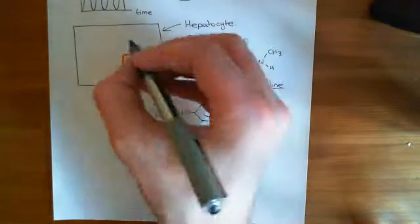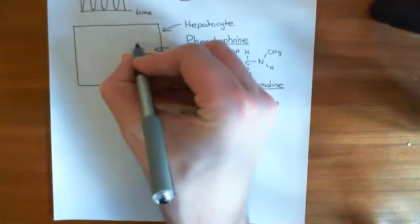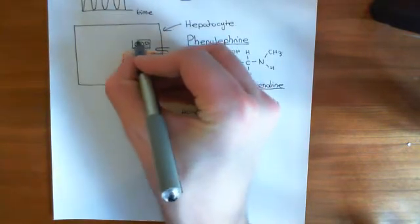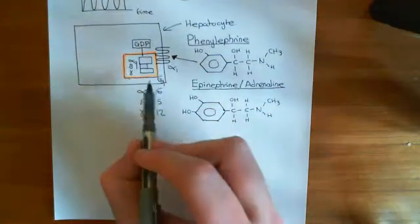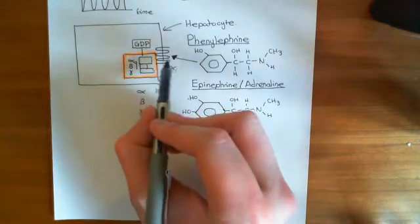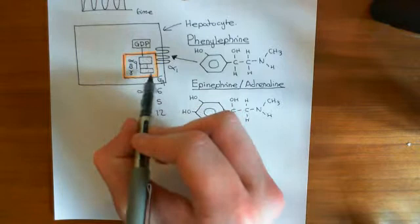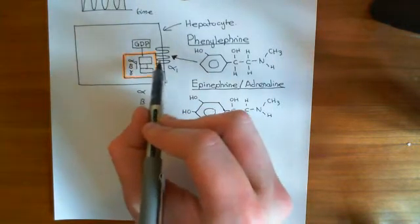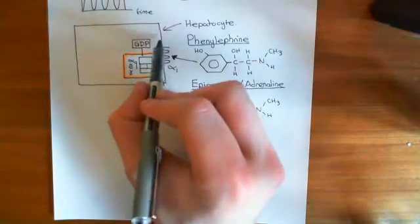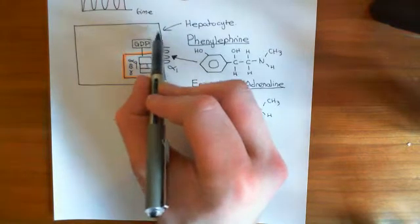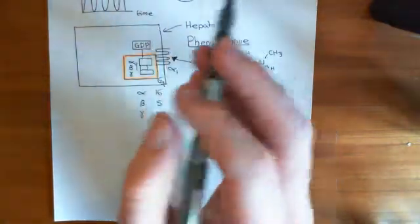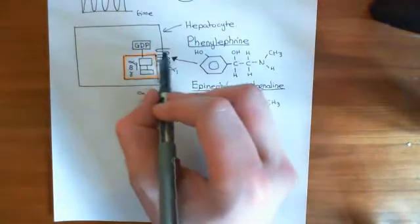When the heterotrimeric G-protein is inactive, the alpha subunit is bound to GDP. When both the receptor and the G-protein are inactive, in some circumstances the G-protein-coupled receptor can actually be physically bound to the inactive G-protein. At other times, the heterotrimeric G-protein will be bound to the inner leaflet of the phospholipid bilayer, skating around underneath, very close by the receptor.